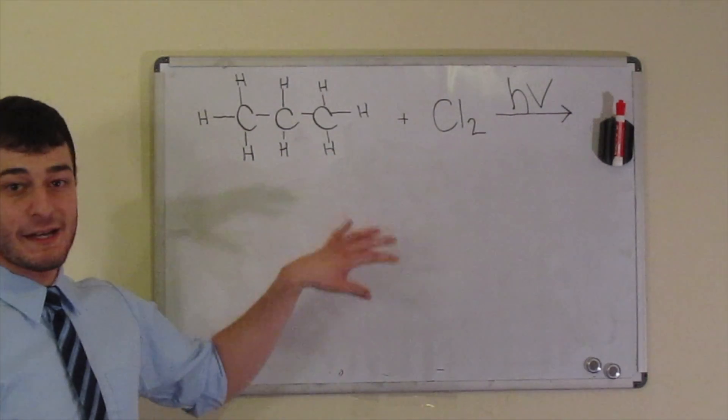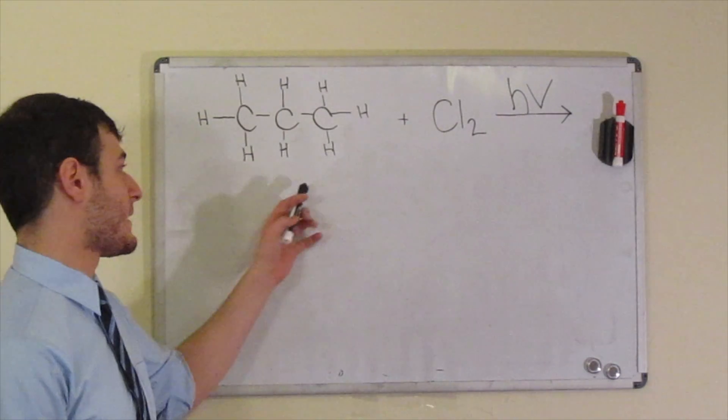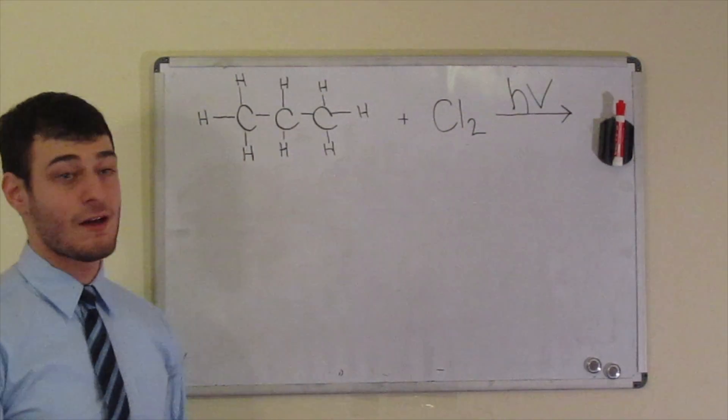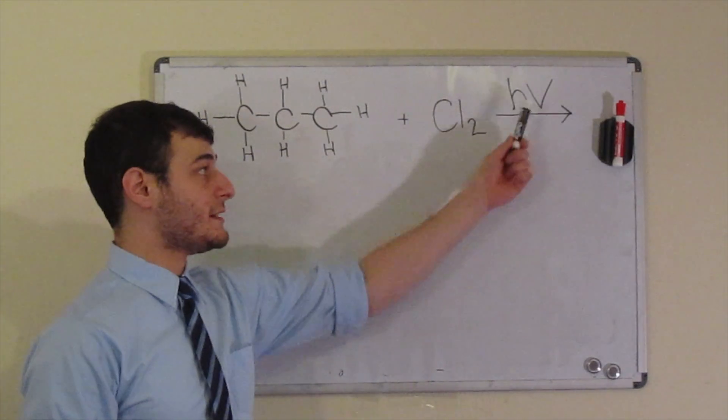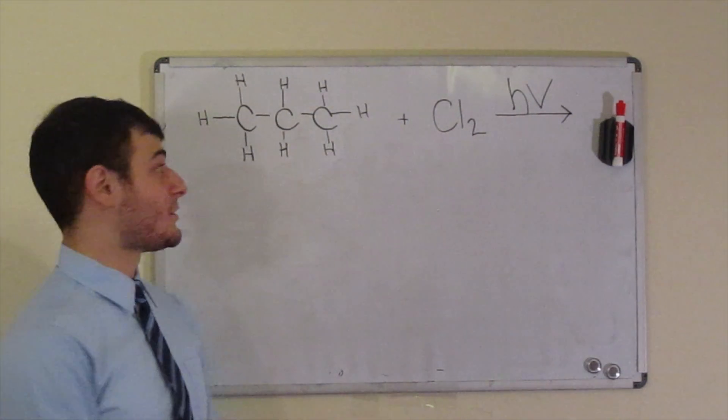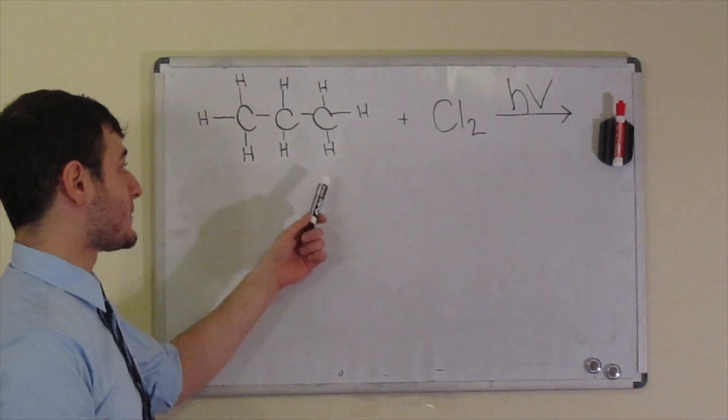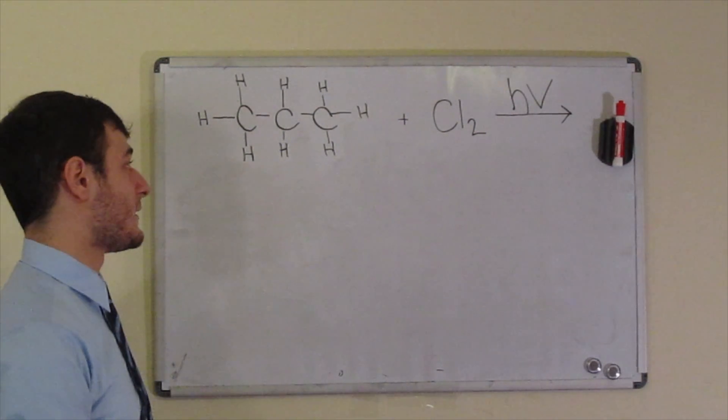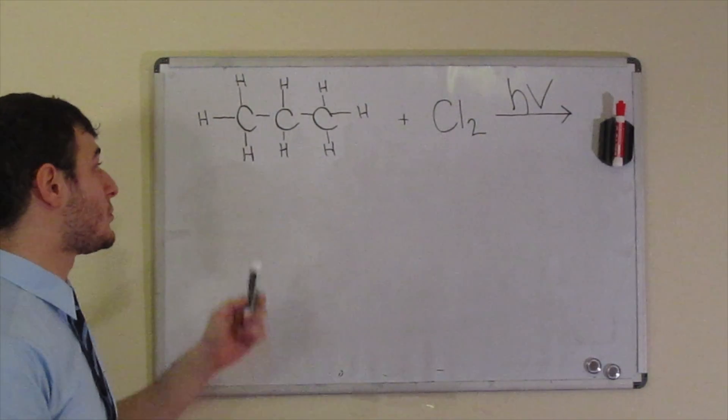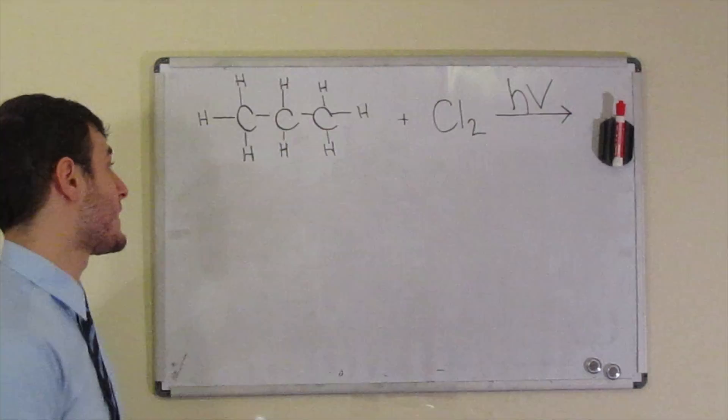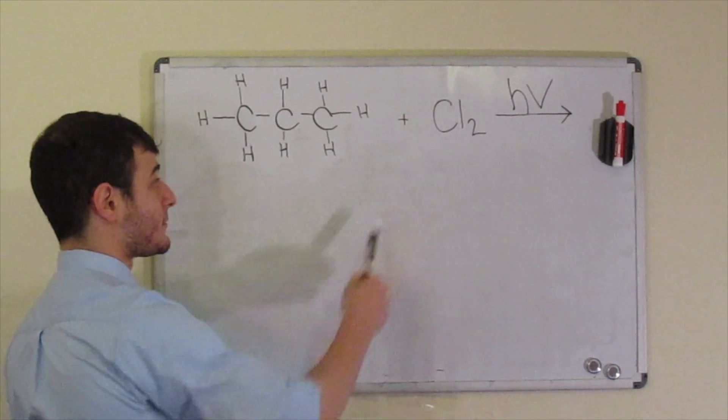So yeah, we're looking at the halogenation of propane. In this case, we're looking at the free radical chlorination of propane. You know, we need to initiate it with light. That's going to generate our chlorine radical, and then it's going to substitute onto our propane. One thing I want to draw attention to is that there's two different kinds of carbons that this chlorine can substitute on.